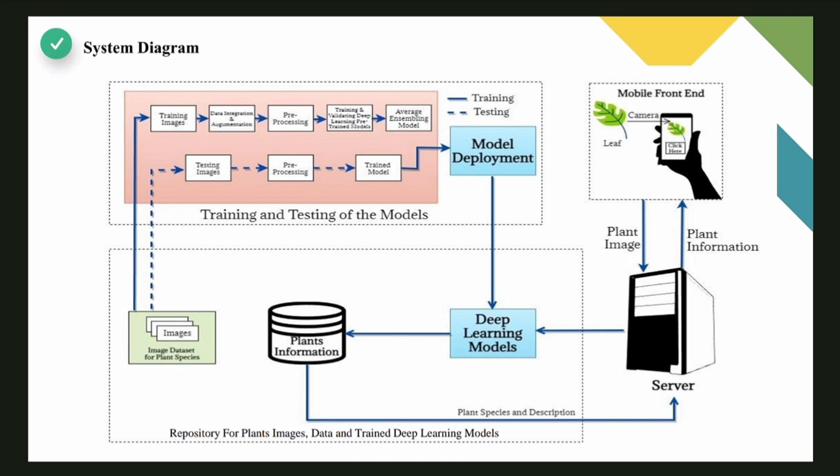The image dataset for plant species is trained and tested, where training of the dataset involves training images, data integration and augmentation, pre-processing, pre-trained models, and average ensembling models. Testing of the dataset includes testing images, pre-processing, and trained model. As a result, the model is deployed and the deployed model is stored temporarily in the repository.